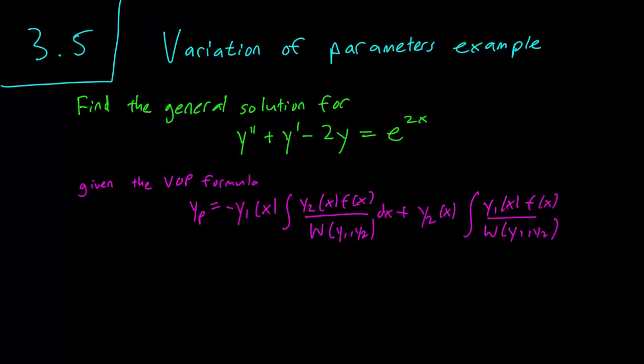Hello class, this is section 3.5, and we are going to go through an example of a problem using the Variation of Parameters formula. I will not expect you to memorize this formula. If you need it, you will be given it in the exam. But here's a typical problem, so we have a non-homogeneous equation here.